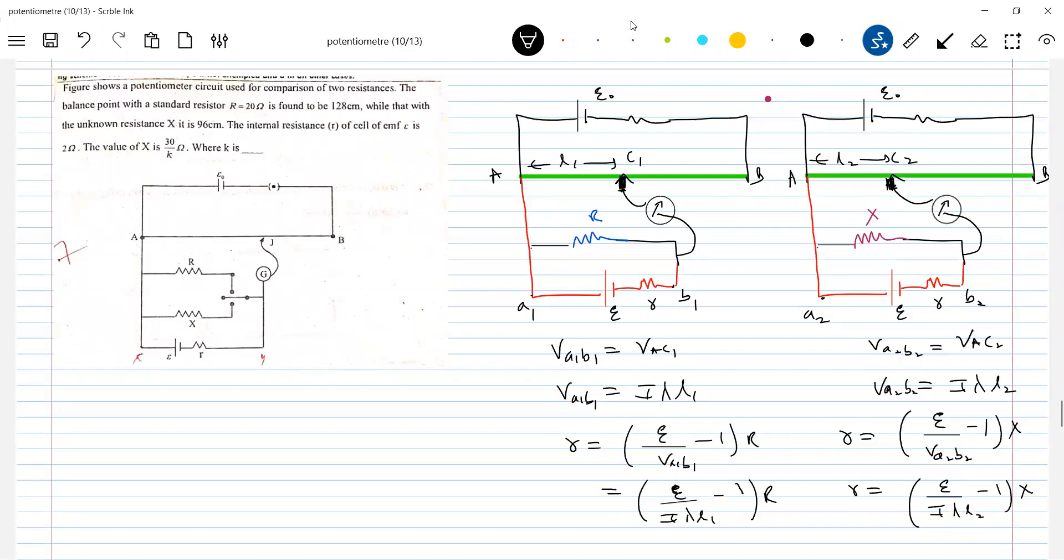30 by 7, 30 by K. It is given. K equal to 7 will come.